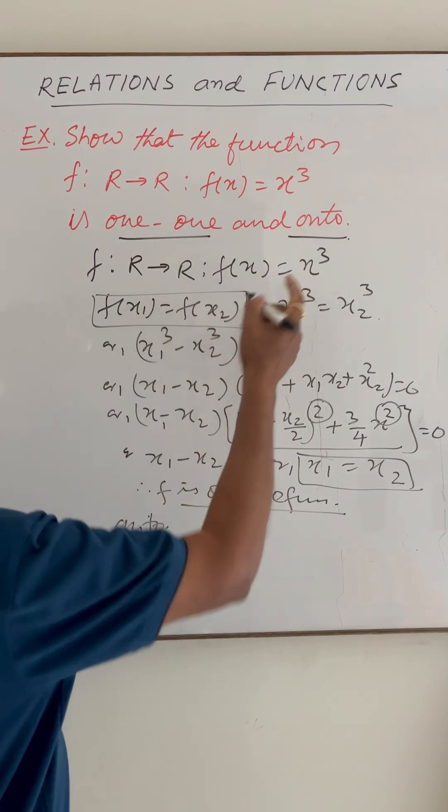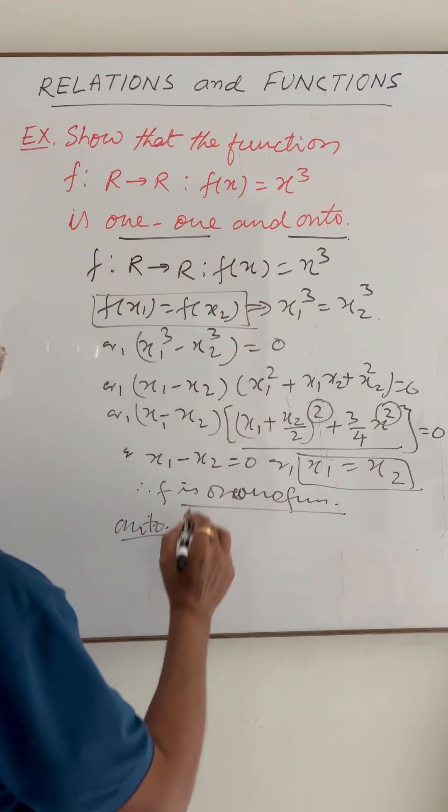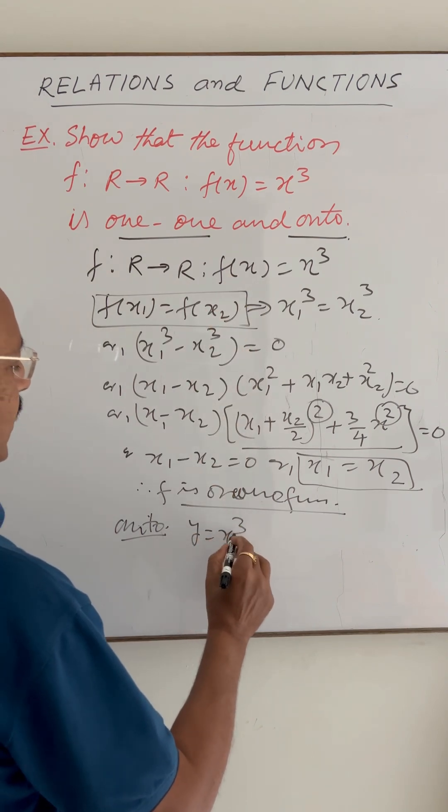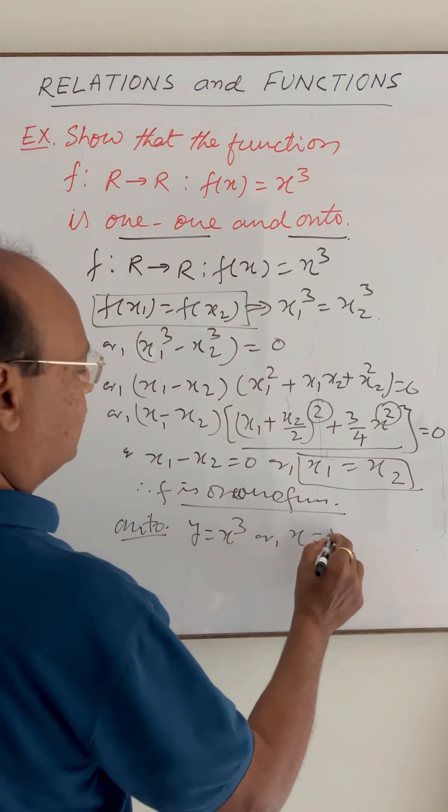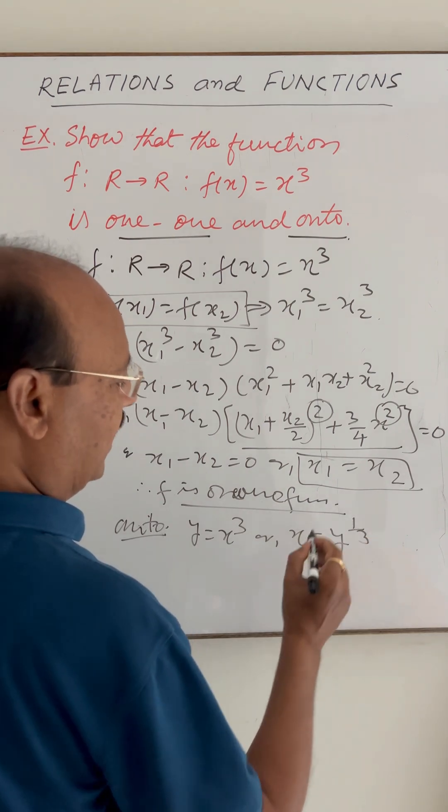Here f(x) is equal to x cube. In place of f(x) we will write y. So y is equal to x cube or x is equal to y to the power 1 by 3.